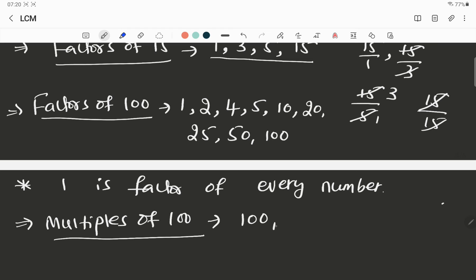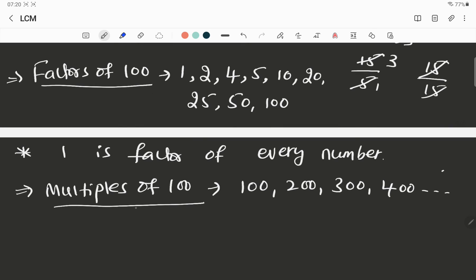So multiples of 100 are 100. Once a 100, 100, twos are 200, 300, 400. So it goes like this. So multiples are infinite. Multiples are infinite, but factors are finite.